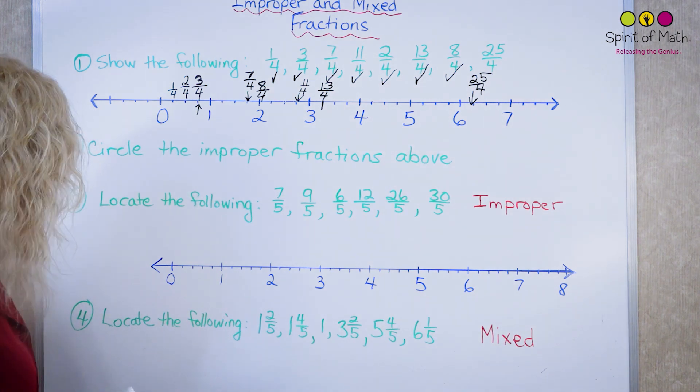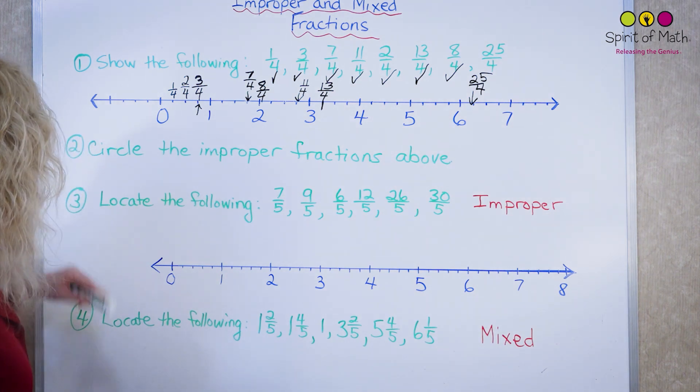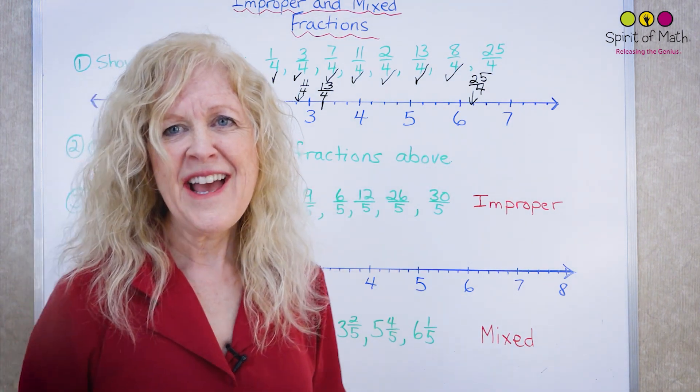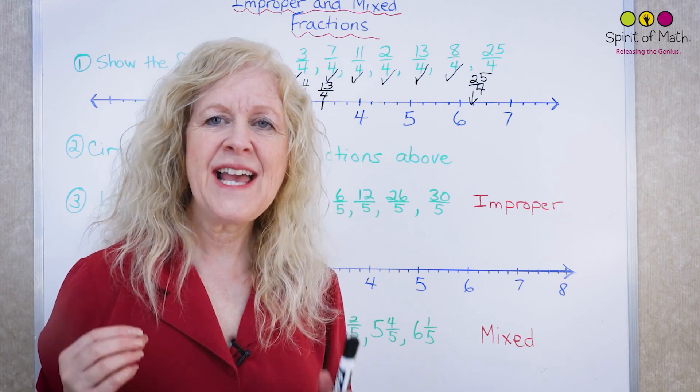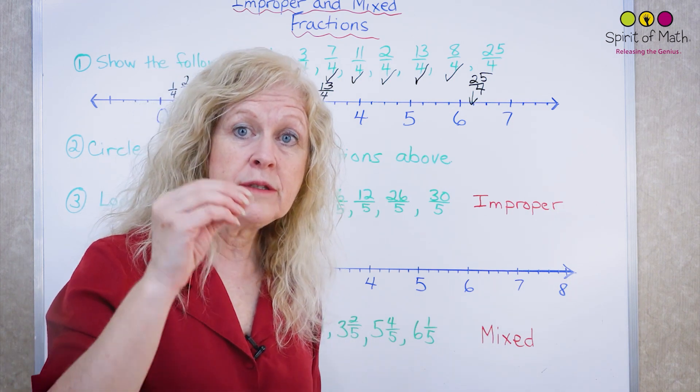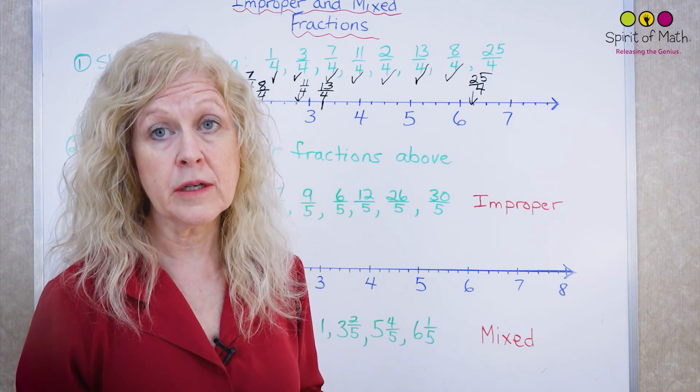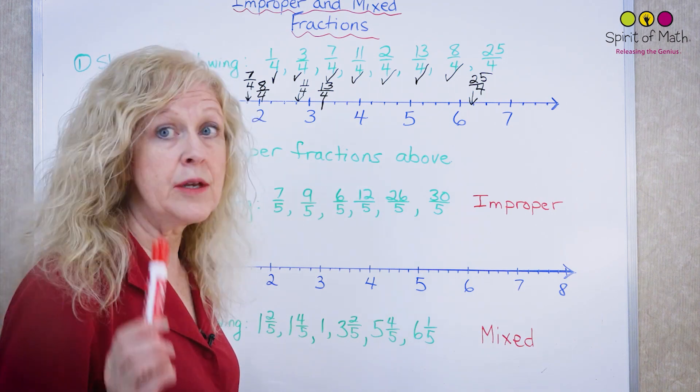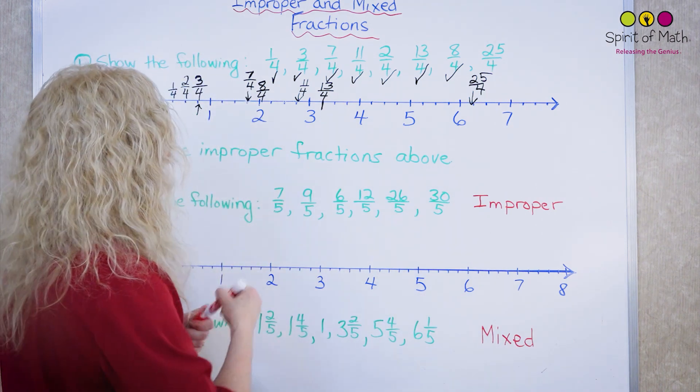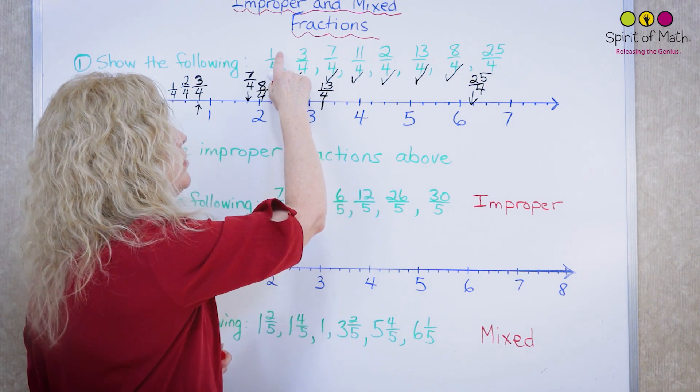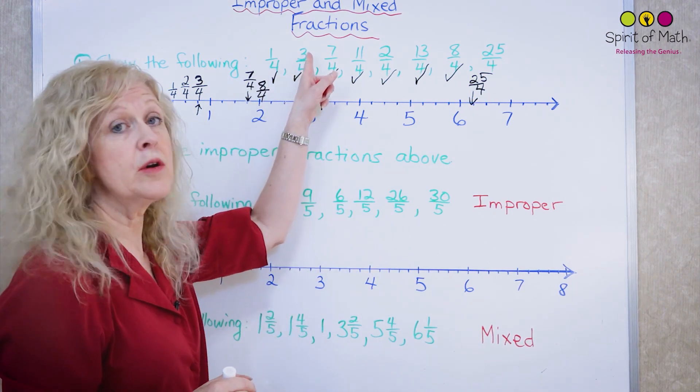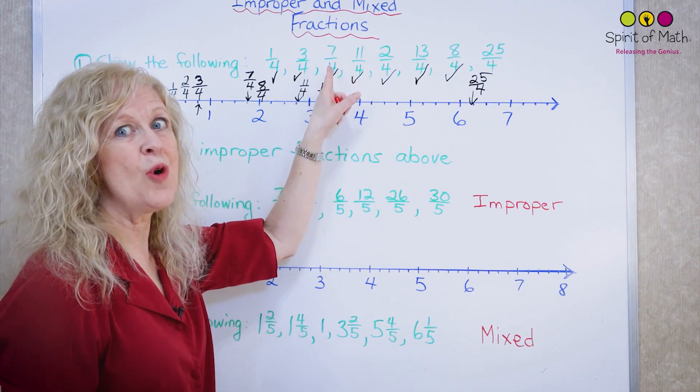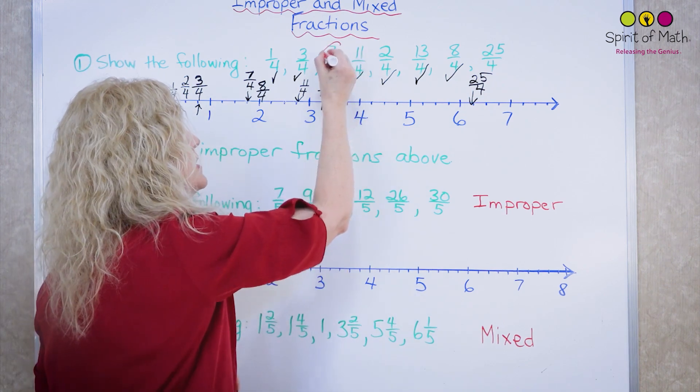Now, the next question says circle the improper fractions above. What's an improper fraction? An improper fraction is any fraction where the numerator, the top number, is bigger than the denominator. So let's go through, and I'm going to circle this in red, all the improper ones. I see one quarter, the one is smaller than the four, so it's not improper. Three quarters, the three is smaller than the four, so it's not improper. Seven quarters, the seven is bigger than the four, so that's improper.